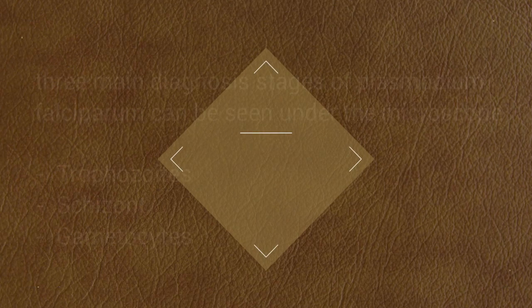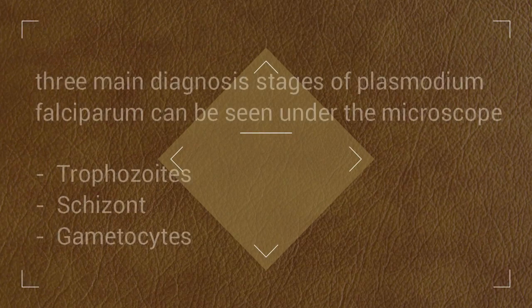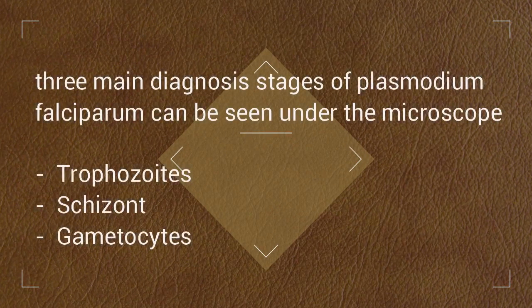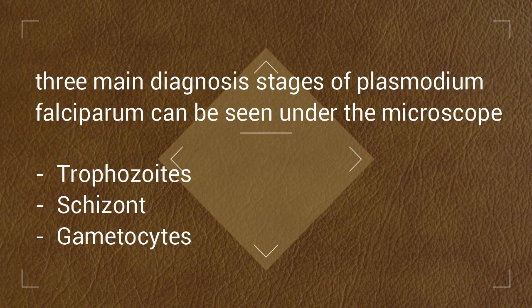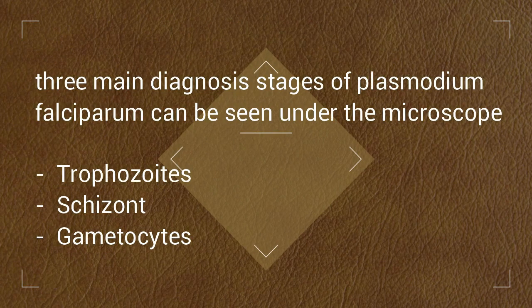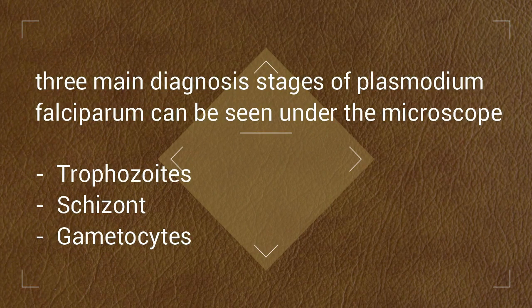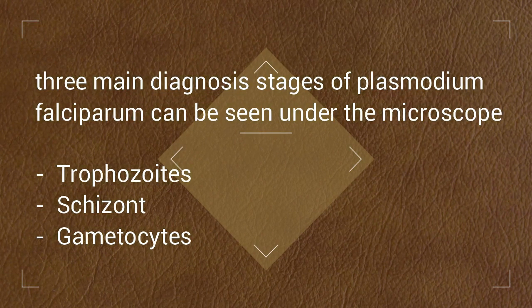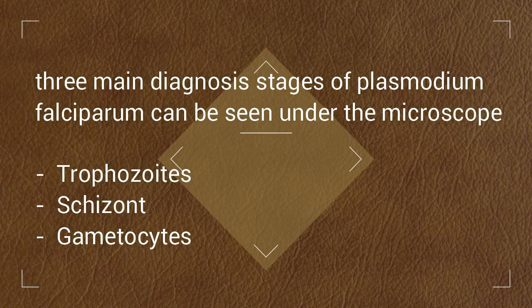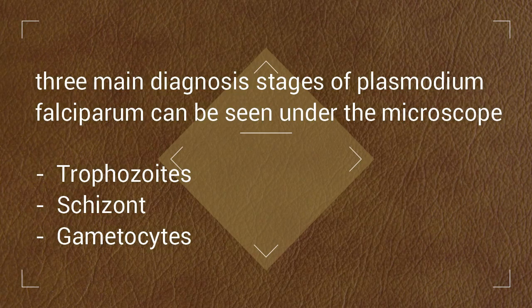Three main diagnostic stages of Plasmodium falciparum can be seen under the microscope: trophozoites, schizonts, and gametocytes.